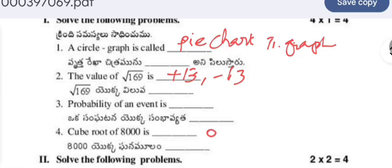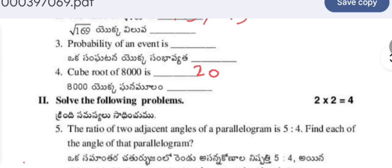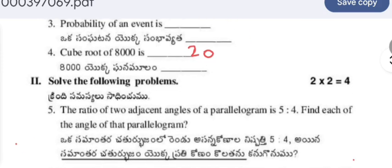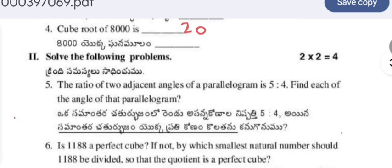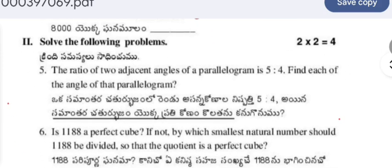Cube root of 8000: for three zeros in the number, in its cube root you will get one zero. The cube root of 8 is 2, so the answer is 20.